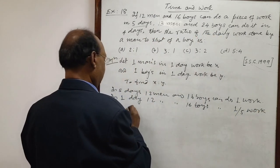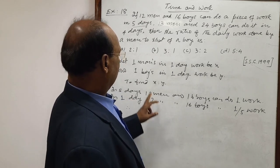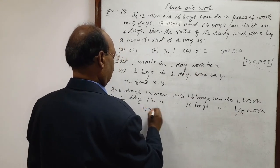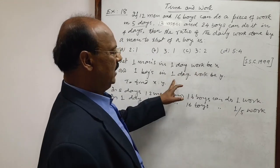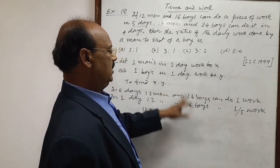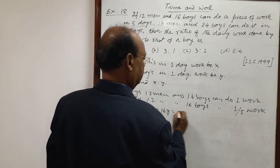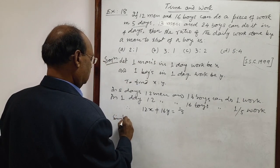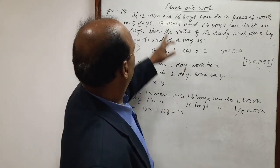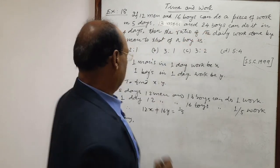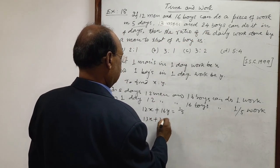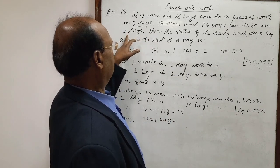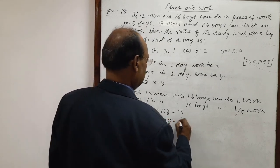So we can make an equation. One man's one day work is X, so 12 men's one day work is 12X. Similarly, one boy's one day work is Y, so 16 boys' work is 16Y. This gives us: 12X plus 16Y equals 1 by 5. Similarly, for 13 men and 24 boys completing the work in 4 days, in one day this will be 1 by 4. So we write: 13X plus 24Y equals 1 by 4.